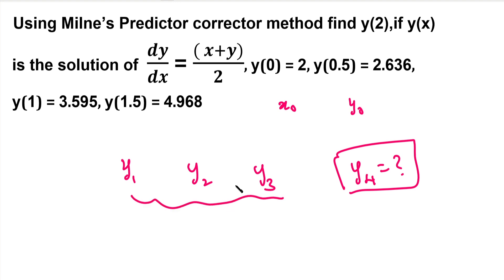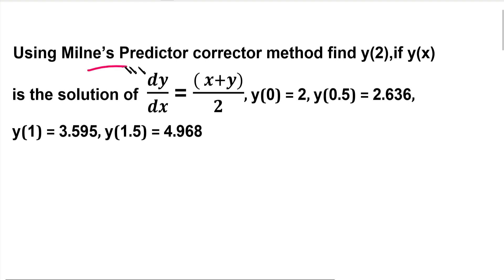Suppose we need to find three starting values. You can use the Euler method, modified Euler method, Taylor series method, or Runge-Kutta method — any other method. At that time, you will mention what method to use. In this question, you will use the Milne's predictor and corrector method.